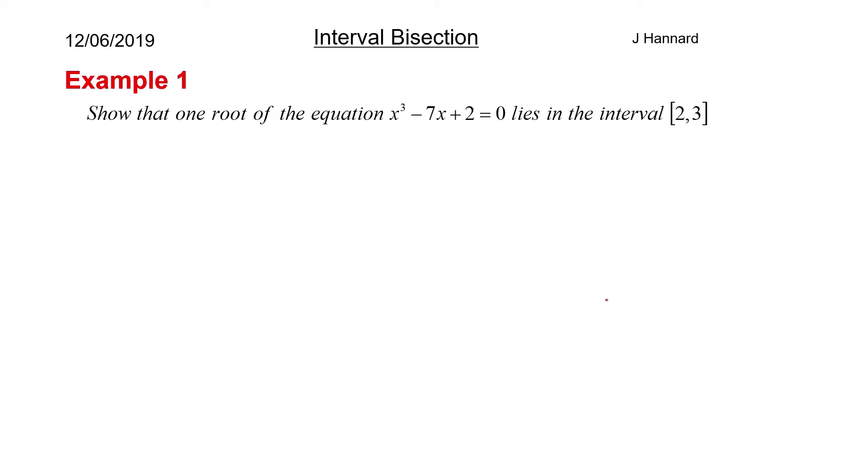Show that one root of the equation x cubed minus 7x plus 2 equals 0 lies in the interval [2,3]. So what do we know about a root?